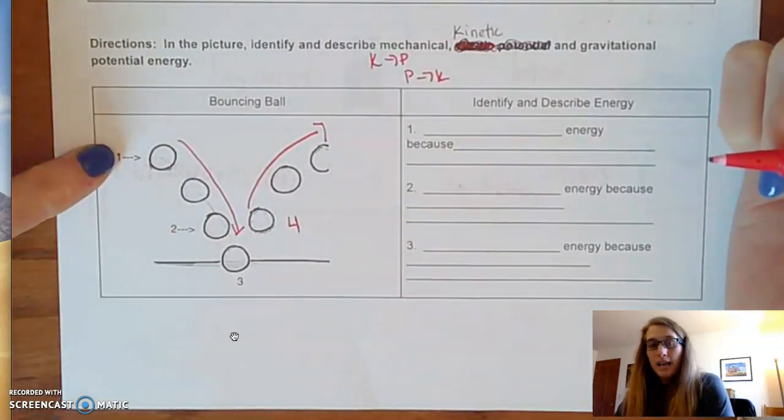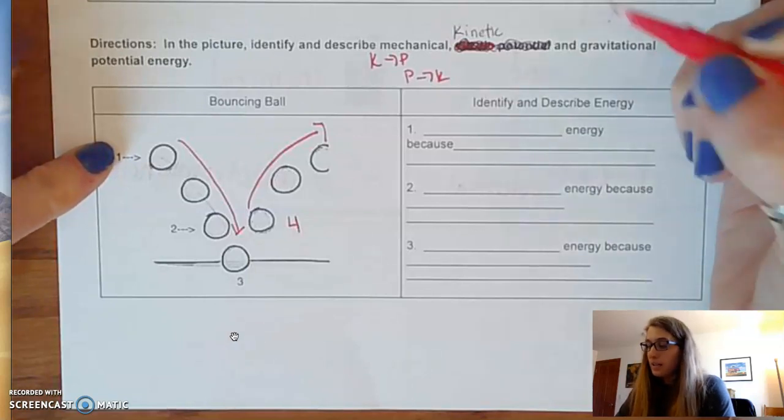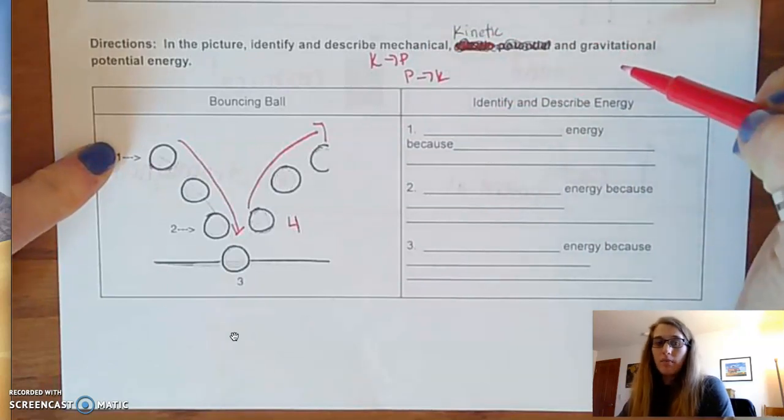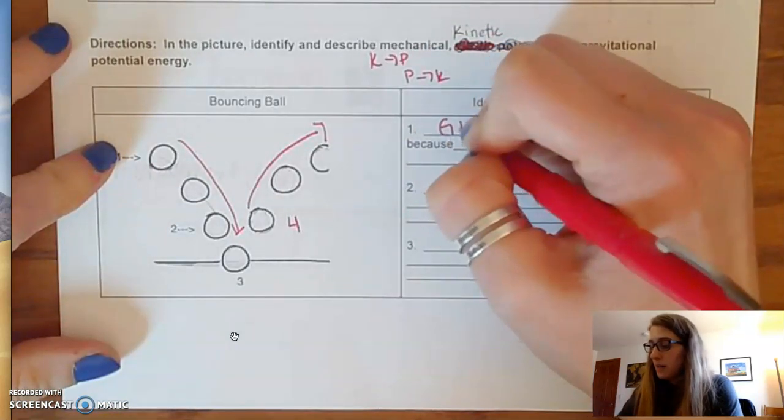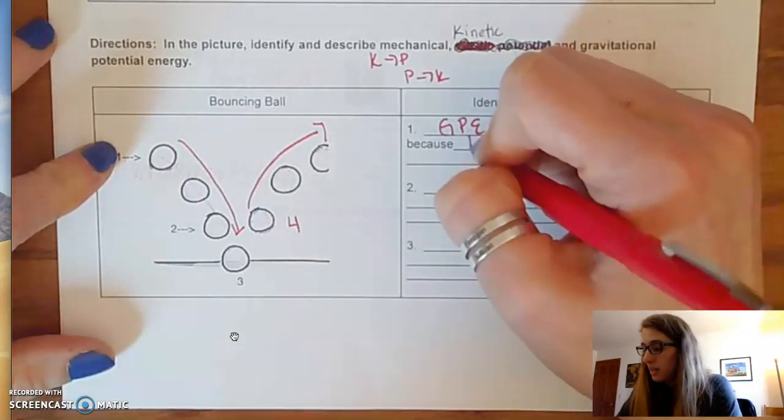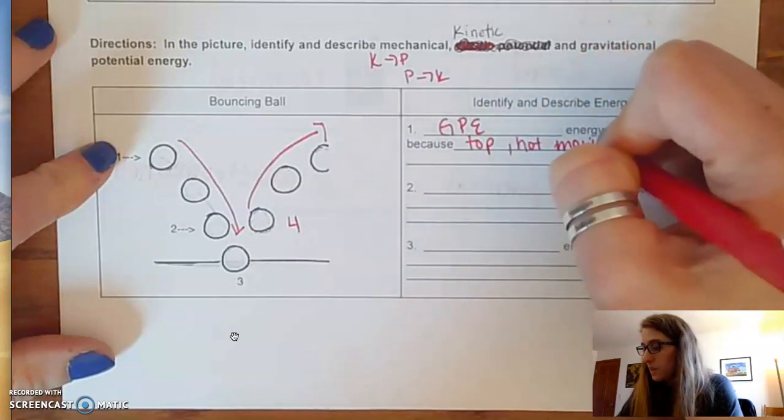So at number one, it's at the top of its bounce, and I know that any time something is at the very top, is it going to be mechanical, kinetic, or gravitational potential? Think to yourself. Hopefully you're like, oh, it's at the top, and so there's a spot where it's not moving. So it's at the top and it's not moving.